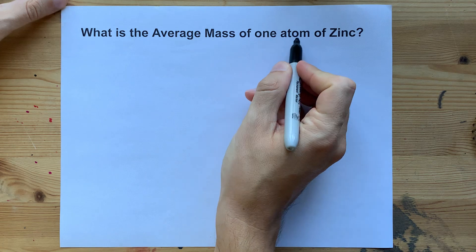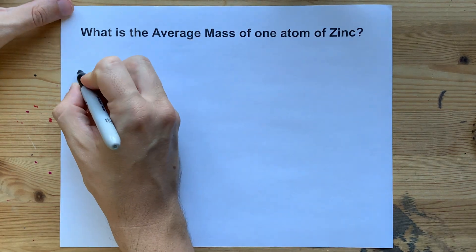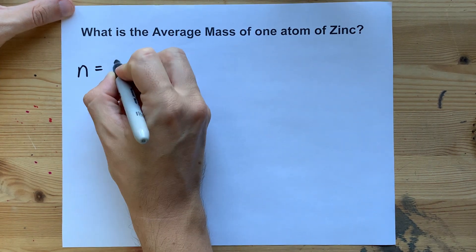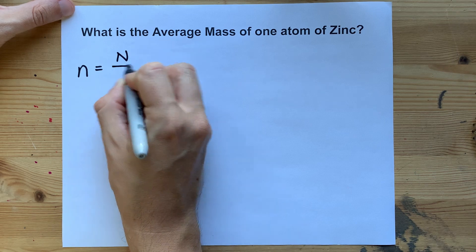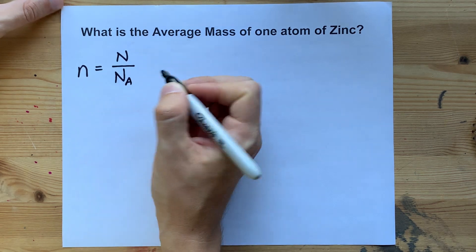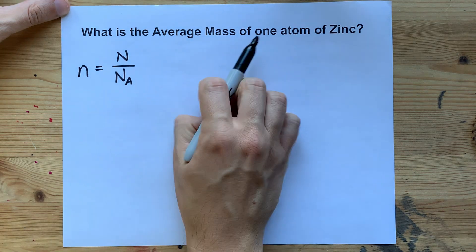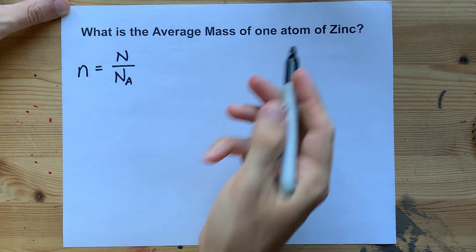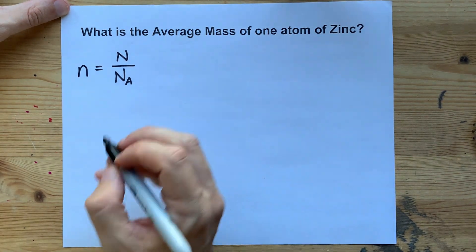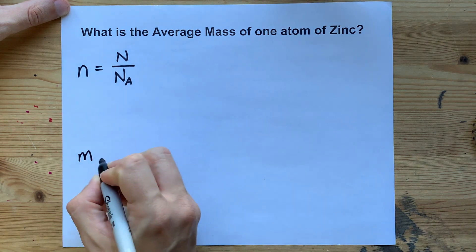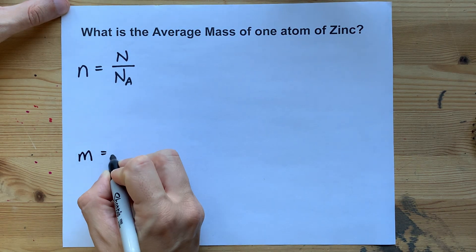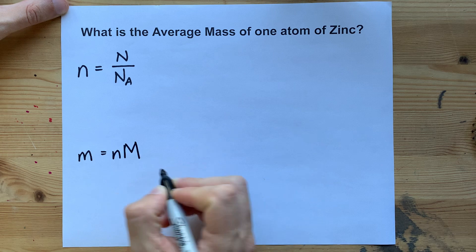You can convert one atom into moles with the formula: number of moles equals number of particles divided by Avogadro's number. That's going to let you get the number of moles that one atom is. It's going to be a tiny number. Then you're going to be able to convert that to grams with mass equals moles times molar mass.